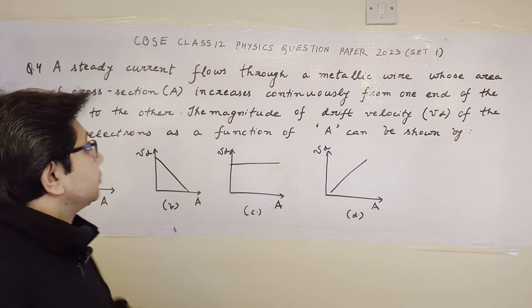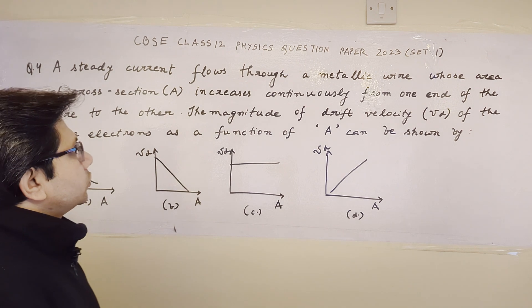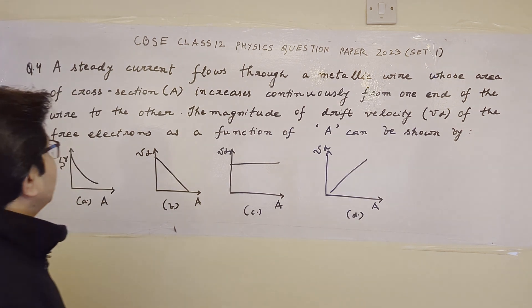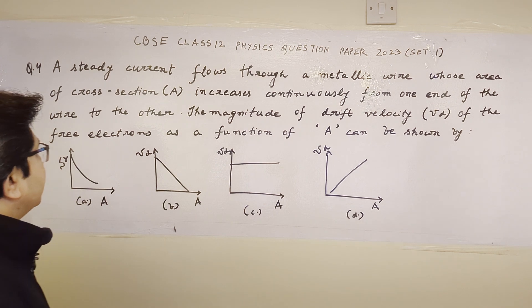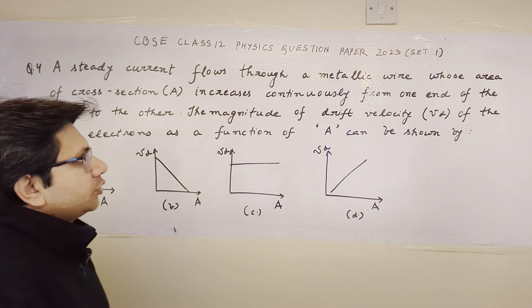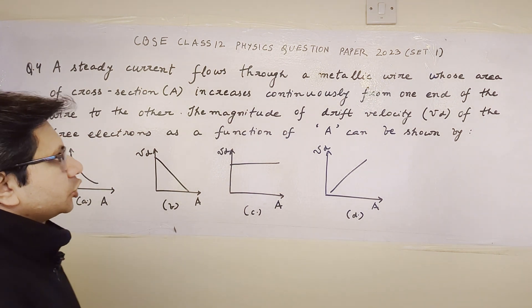Hello students. The question is: a steady current flows through a metallic wire whose area of cross-section A increases continuously from one end of the wire to the other. The magnitude of the drift velocity of the free electrons as a function of A can be shown by the given options in terms of graphs.